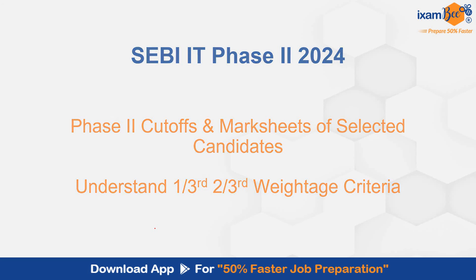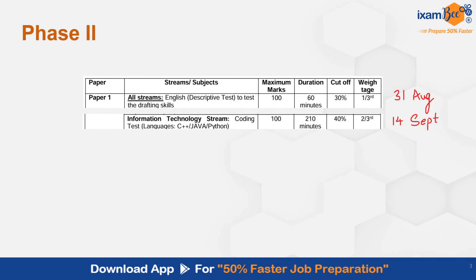Starting with the exam pattern, there are two papers. Paper 1 is Descriptive English, in which you will have essay, précis, and comprehension. This exam is on 31st August. There is a minimum cutoff of 30%, but this is a low score target. The weightage is 1/3rd, and this is a 1-hour paper.